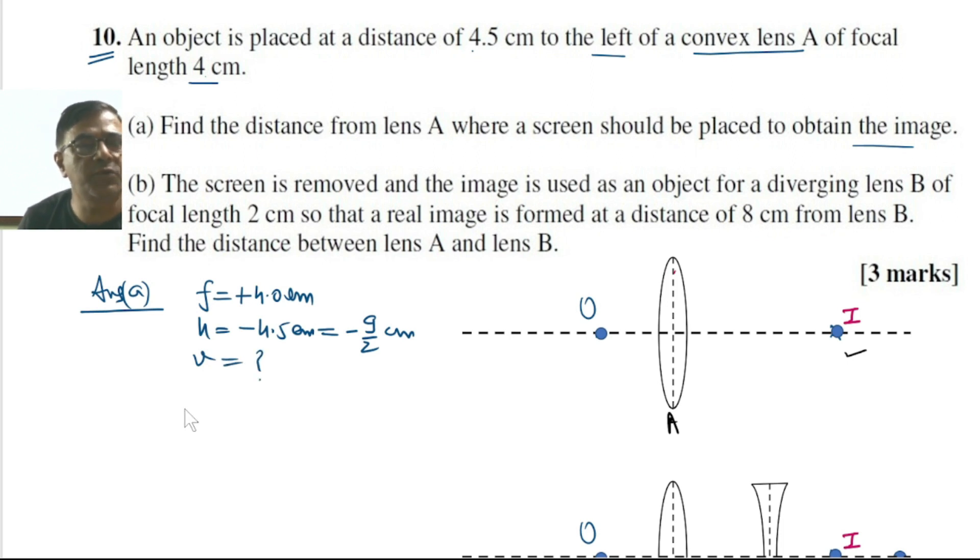Let's do it using the lens formula. 1 by V minus 1 by U equals 1 by F. Substitute the values.